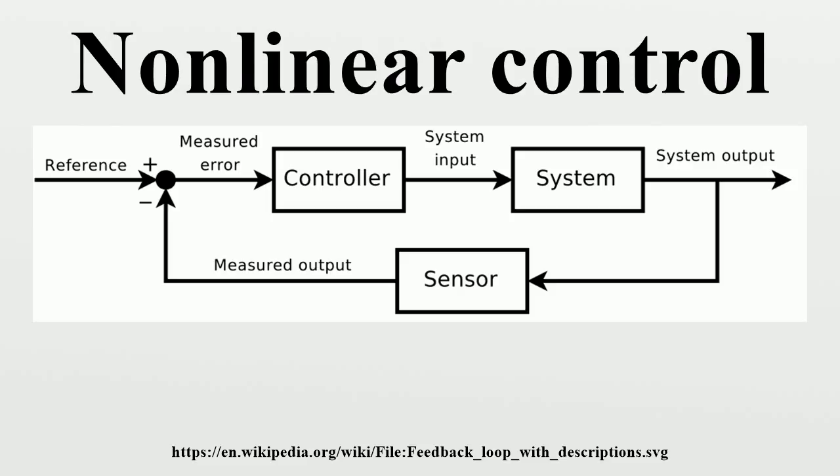Theorem: Consider the system, and suppose A is Hurwitz, the system is controllable, observable, D > 0 and phi satisfies the sector condition. Then the system is globally asymptotically stable if there exists a number R > 0 such that I + F(jω)·R·e·H(jω) > 0.